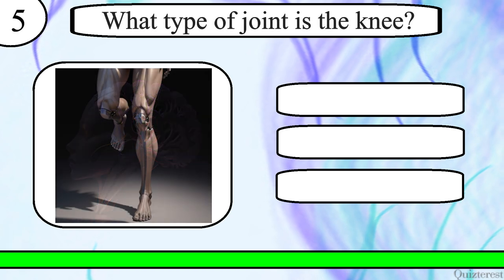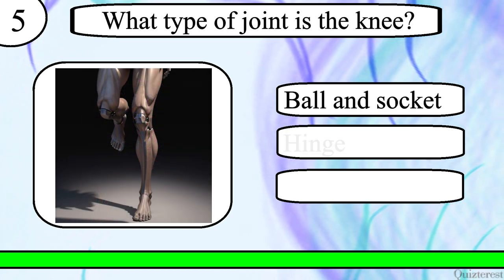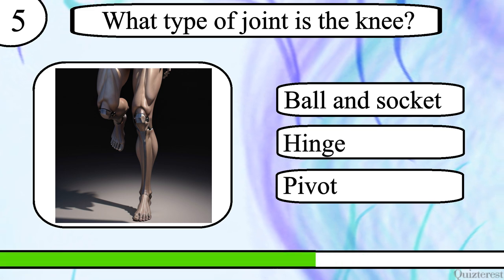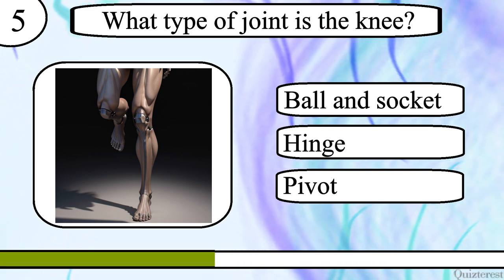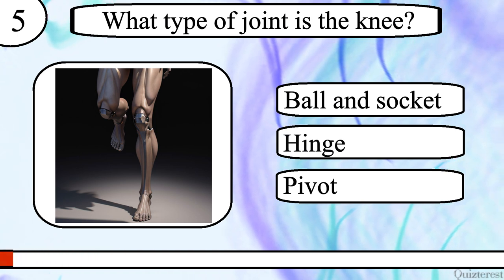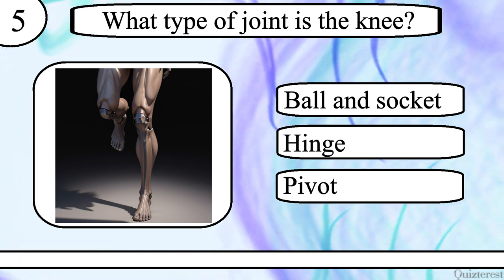Question 5. What type of joint is the knee? Ball and socket, hinge or pivot? The correct answer is hinge.